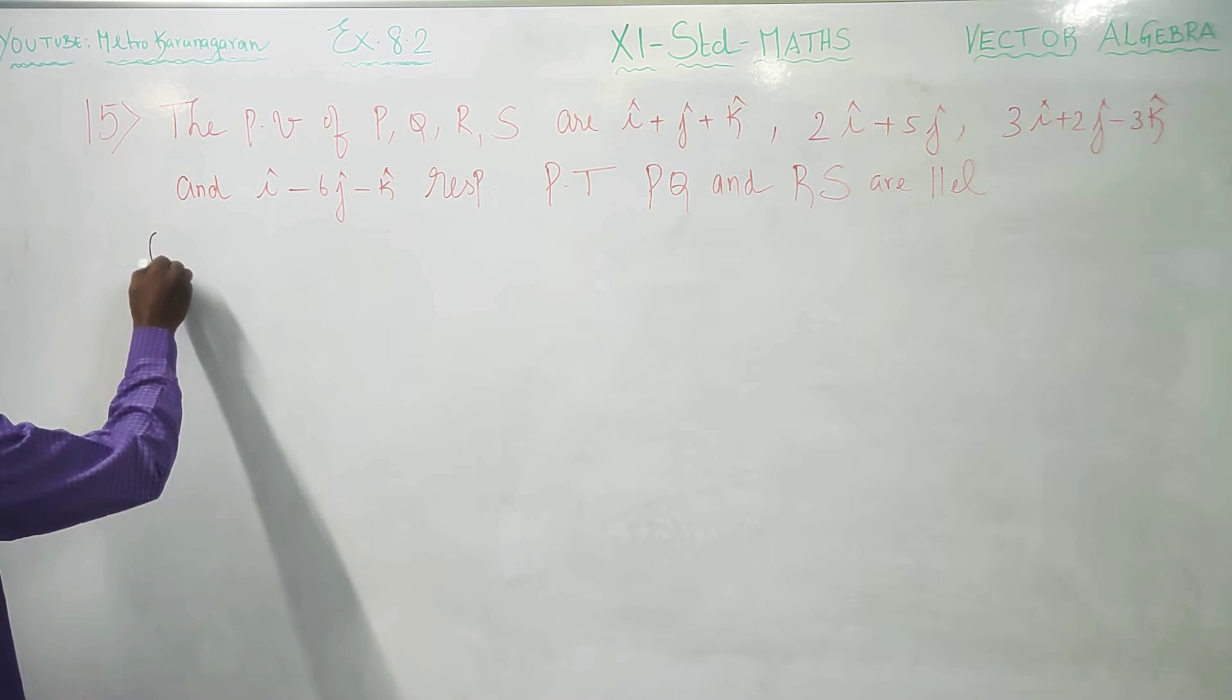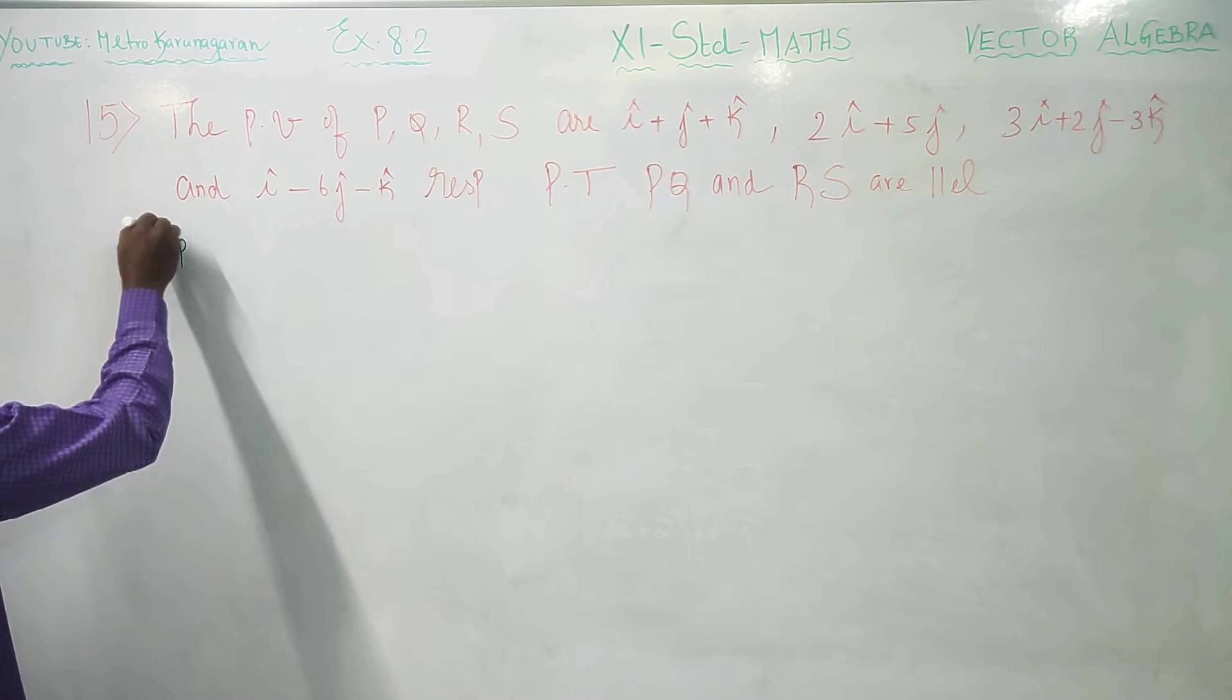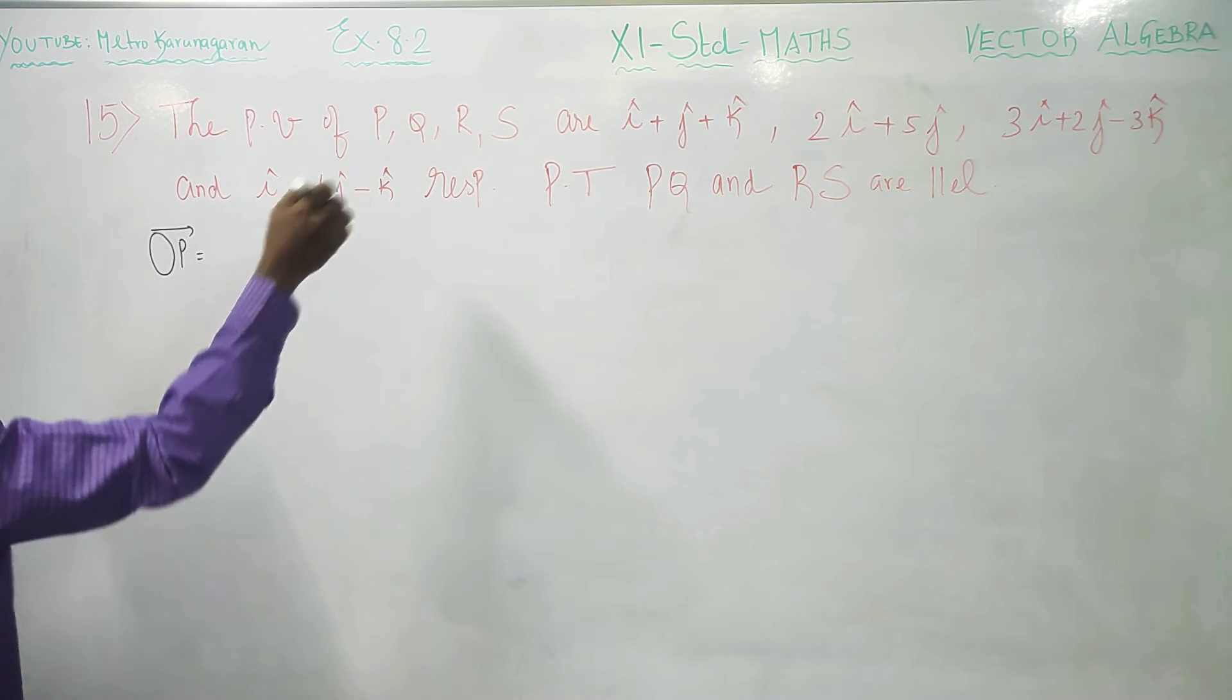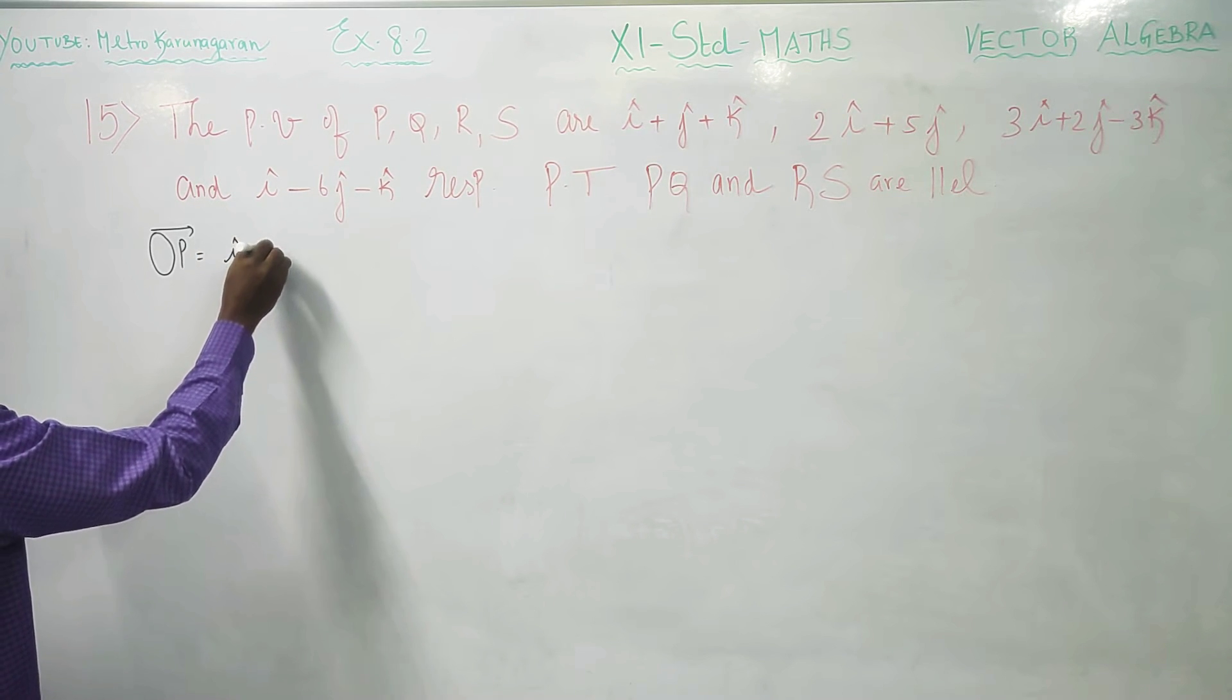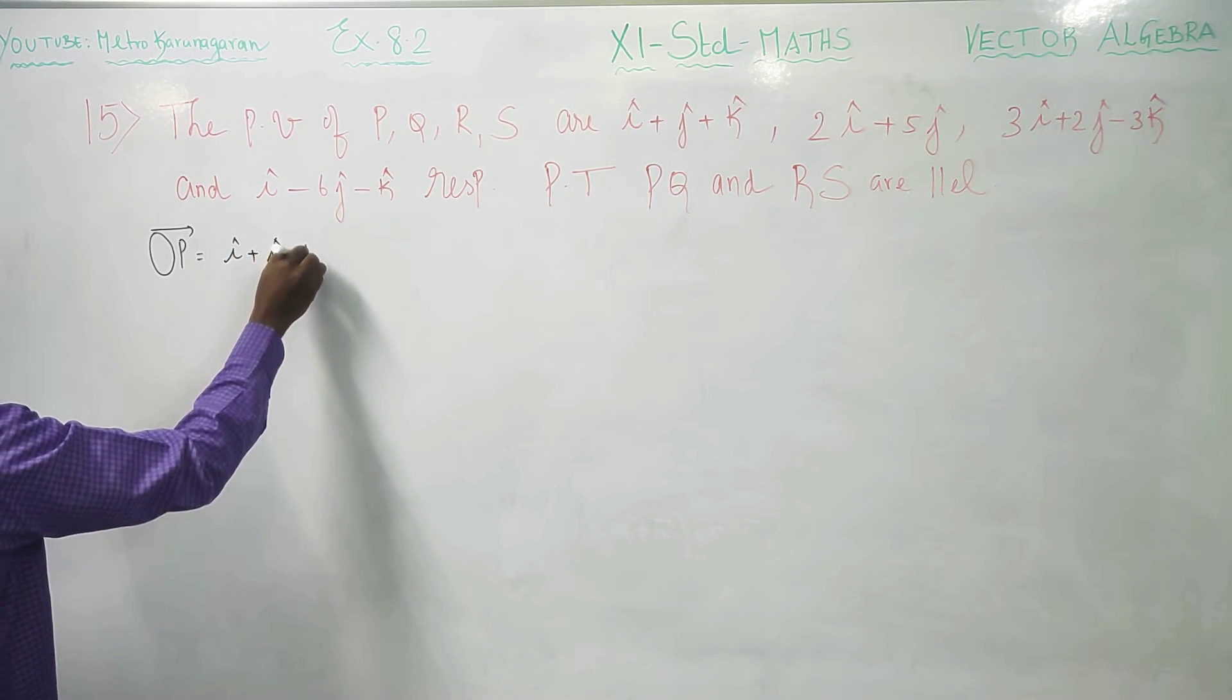Position vector means you have to start like this, OP vector with reference to origin. OP vector is I vector plus J vector plus K vector.